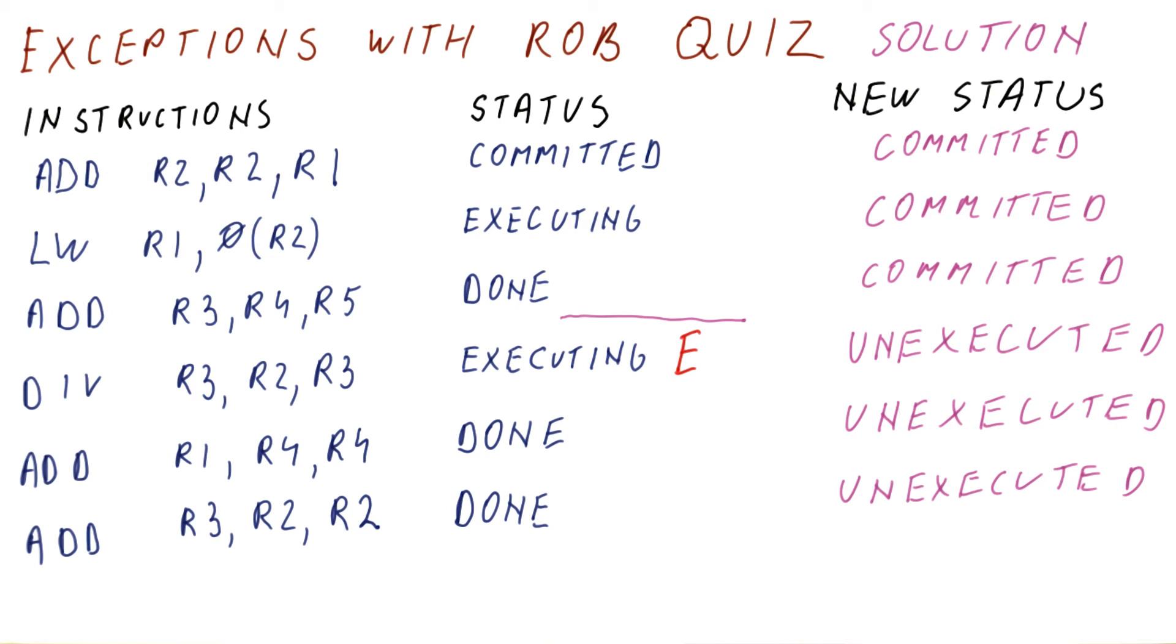And this is the point at which we jump to the exception handler. So pretty much at the point where we call any exception handler, what you have is some instructions have committed.